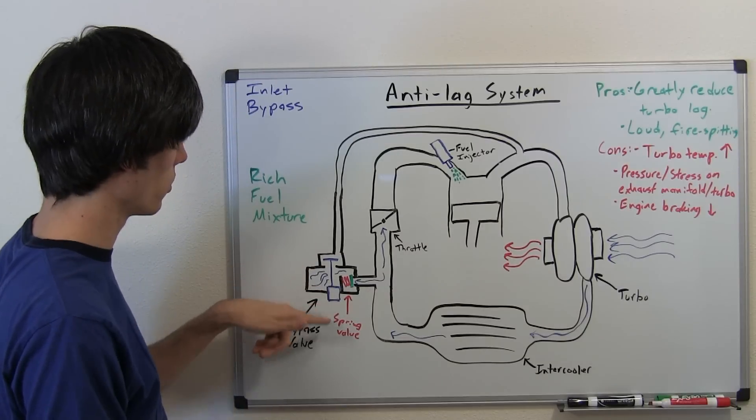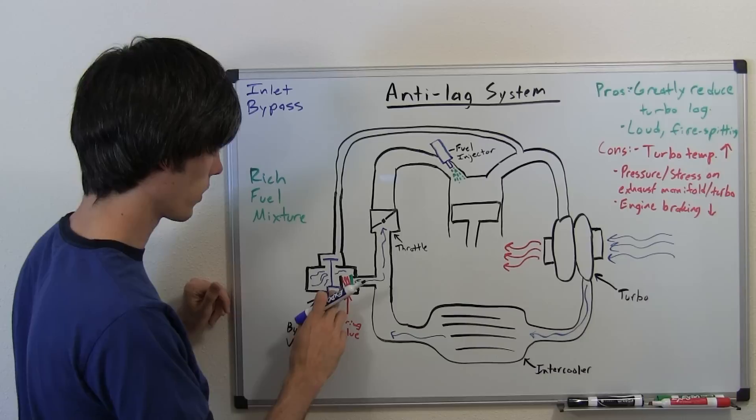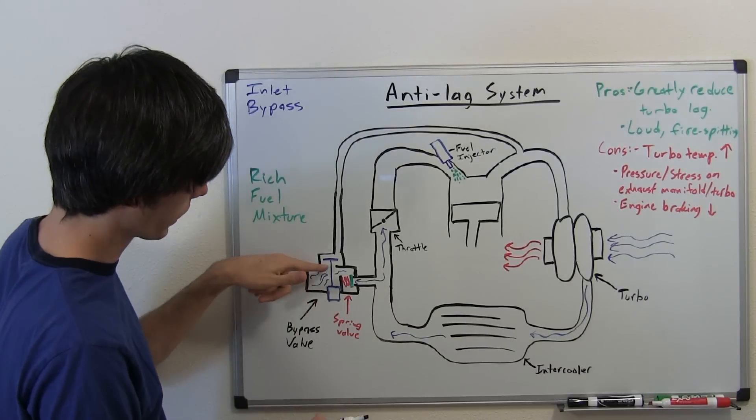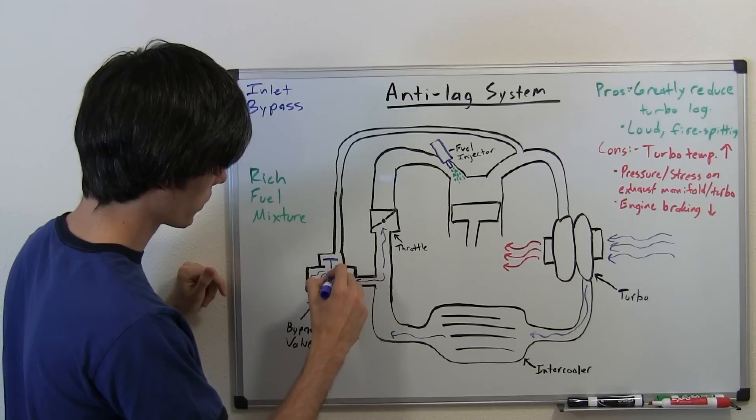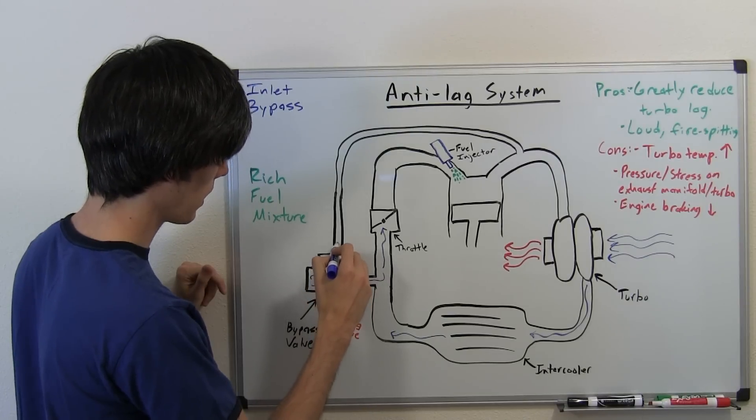The air is flowing in here, and then your ECU says 'hey, we need to open this valve,' so it opens up—this is controlled with a solenoid—and it opens up this valve, which allows air to bypass the engine.